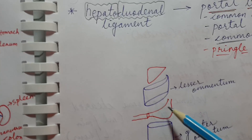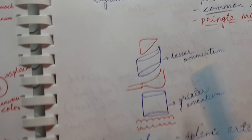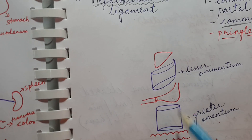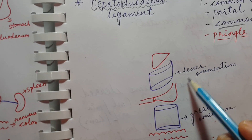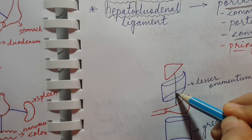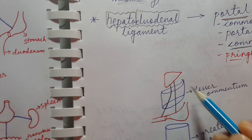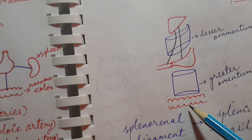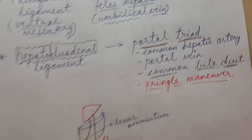The lesser omentum is present between the stomach and the liver, and the greater omentum is present between the stomach and the transverse colon. The gastro-hepatic ligament connects the liver with the stomach, so it is contained in the lesser omentum. The hepatoduodenal ligament is also contained in the lesser omentum. The greater omentum contains the gastrocolic ligament.